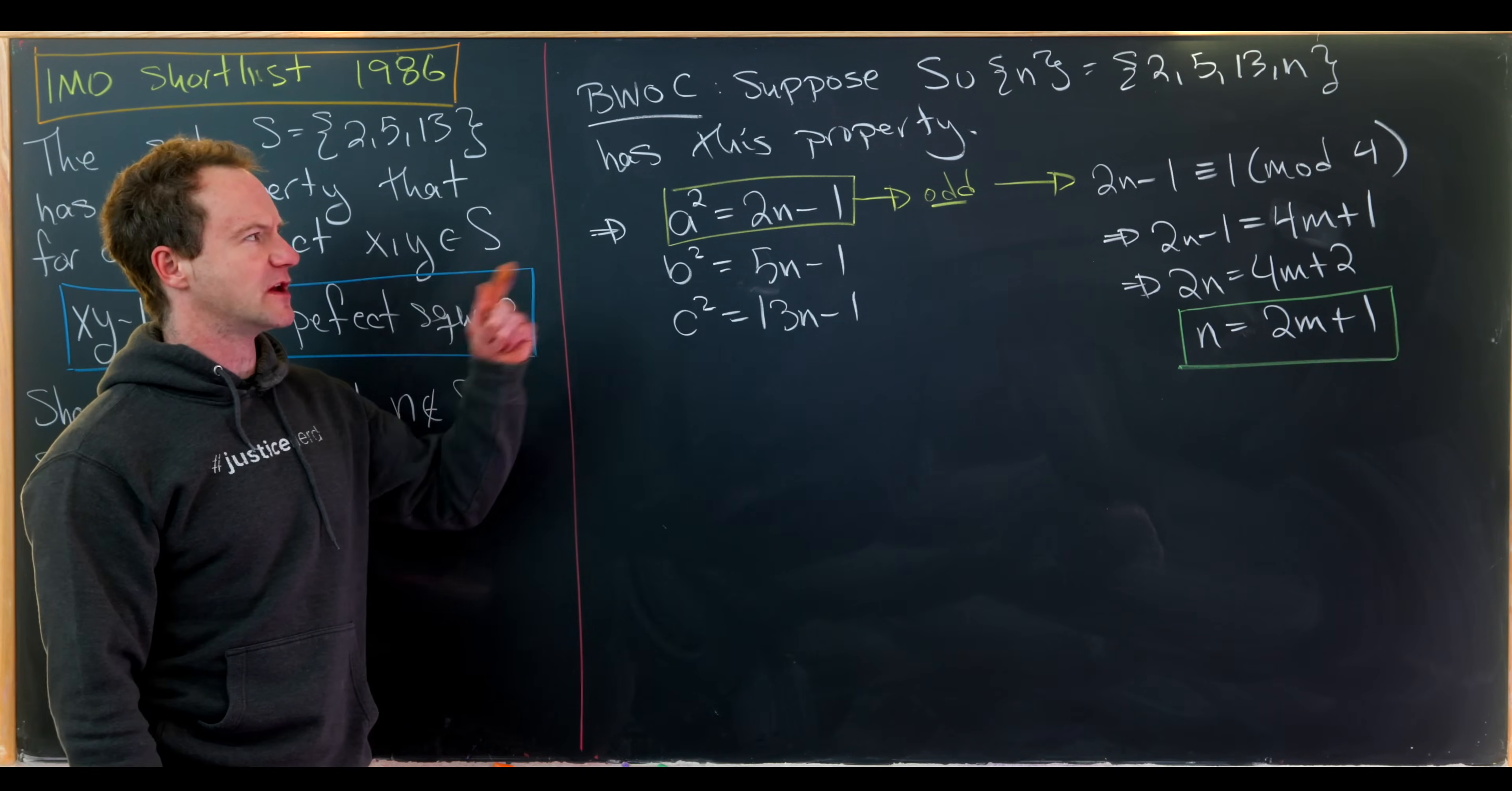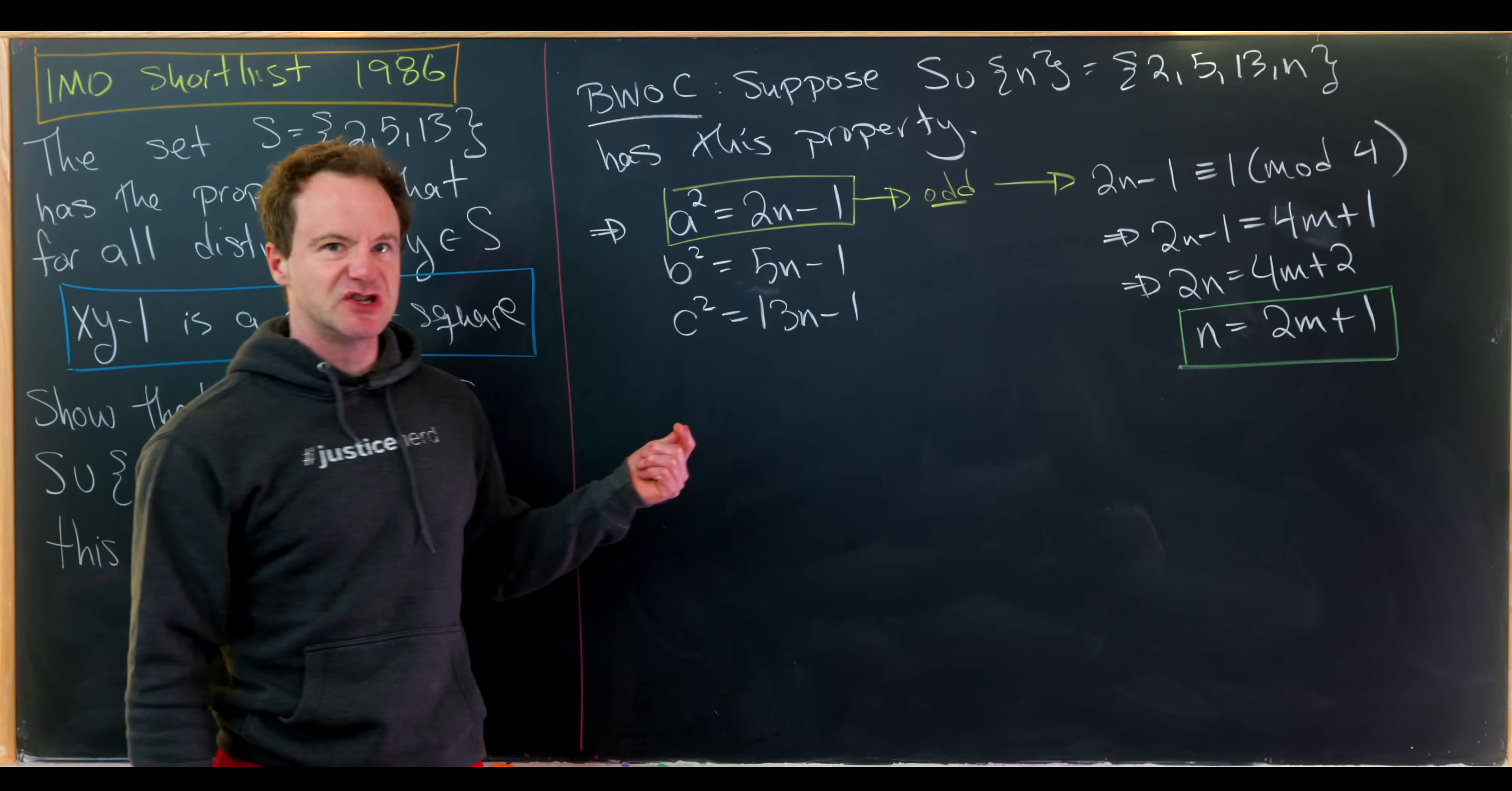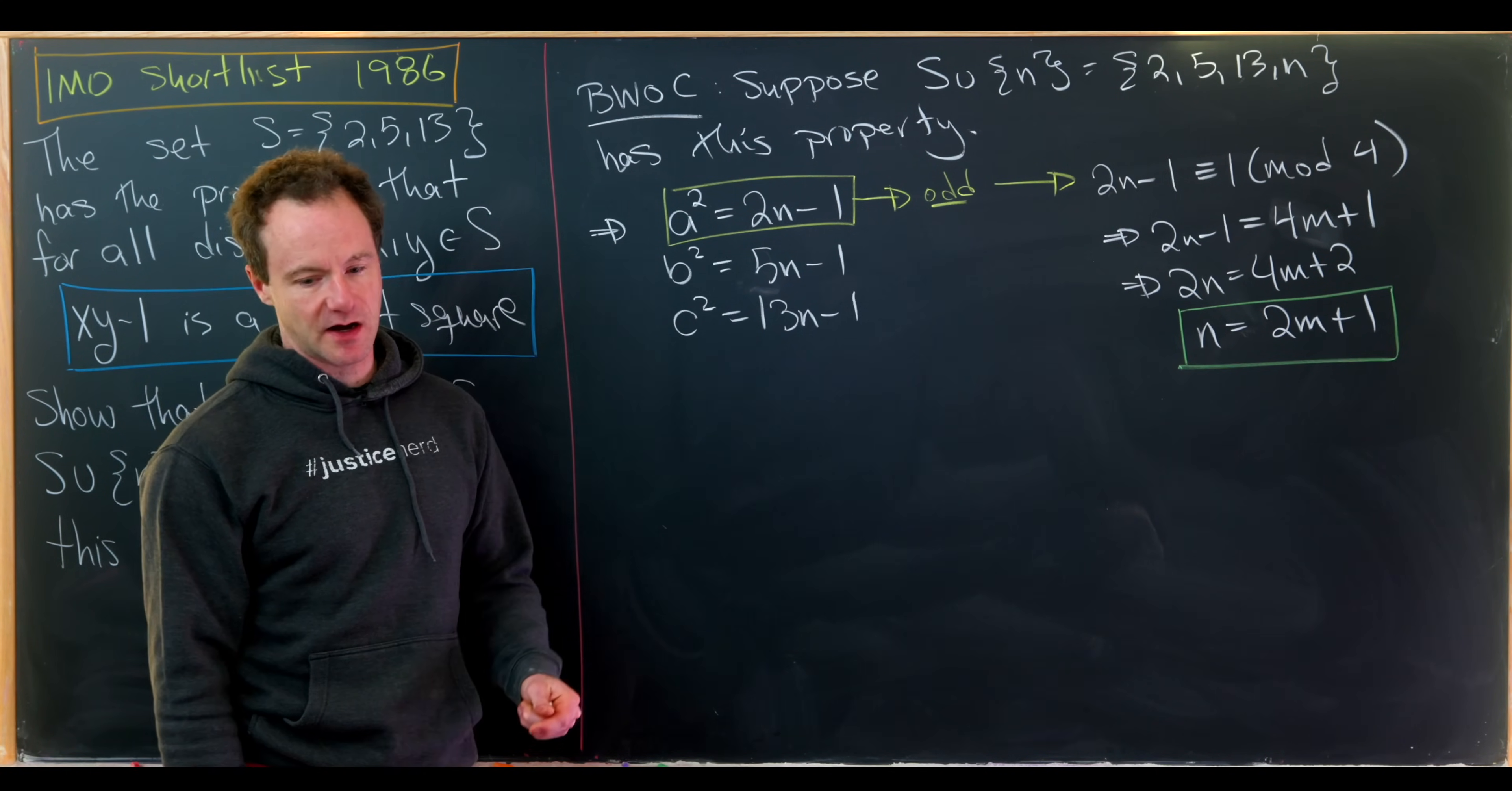And notice that's before even using anything with 5 or 13. So if we just started with 2 and tried to find a number that satisfies this, the next number would have to be odd.